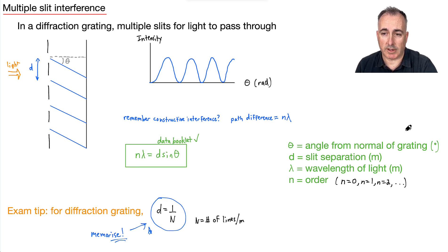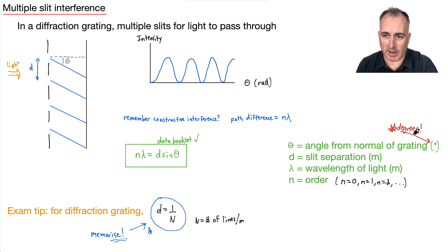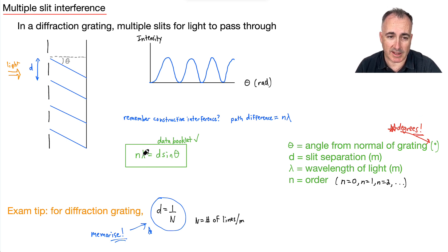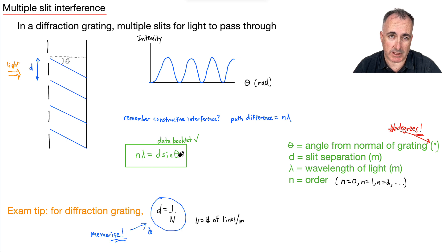One really important point: this angle in N lambda equals D sine theta is in degrees. We've been having a lot of our other angles in radians, but this one here is in degrees. That's really important.